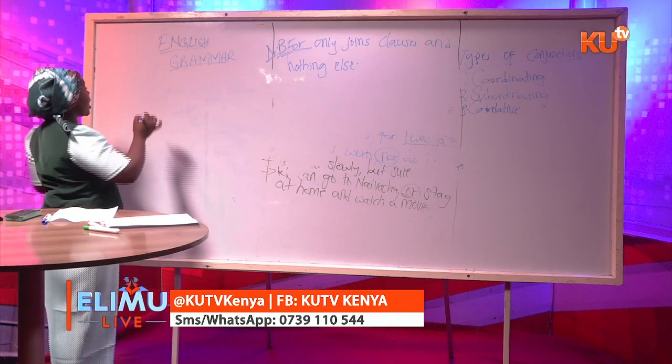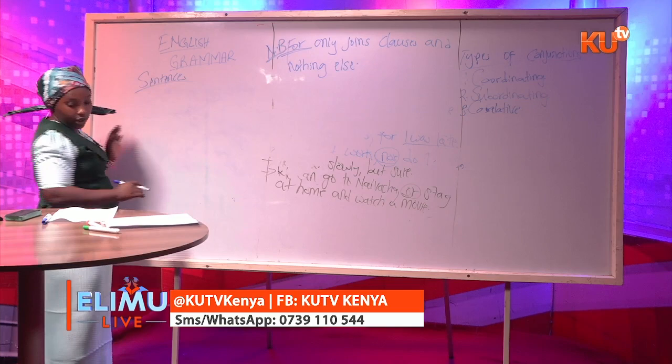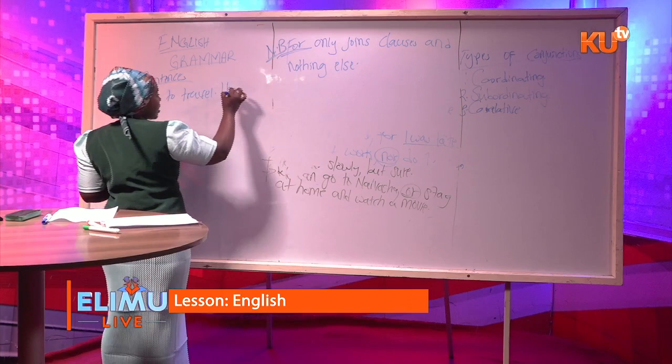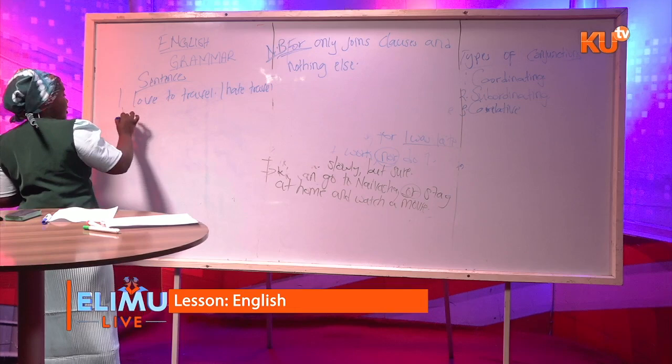For instance, you can have two sentences: 'I love to travel' and 'I hate traveling by bus.' When given such sentences in an exam, the first thing to ask yourself is: which ideas are these? Are they similar, contrasting, negative? Are they giving reasons, or is the first part a result of the second?